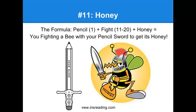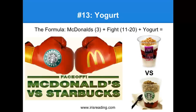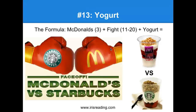A quick review of 11 through 20. Eleven was honey — one is a pencil, and there's a fight because we're within 11 through 20. I was using a pencil sword to fight a bee, because I wanted its honey. Twelve was eggs — we took swan plus fight plus eggs. We were picturing swans fighting over whose eggs they were, maybe one swan fighting another to protect her eggs. Thirteen was yogurt — we remembered McDonald's and the showdown between McDonald's and Starbucks over who has the better yogurt parfait.